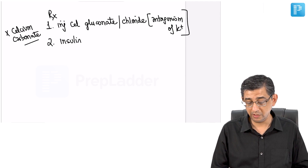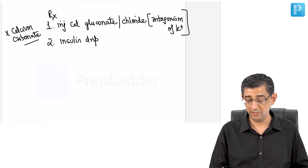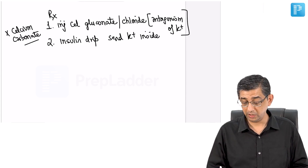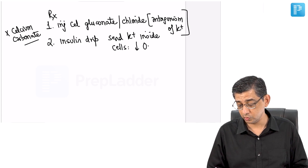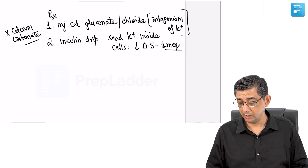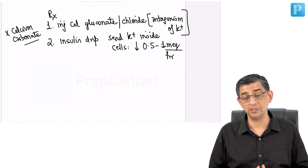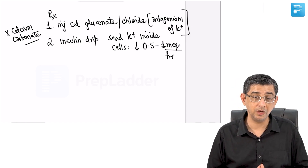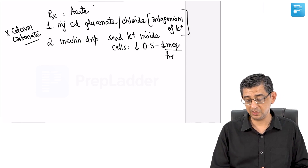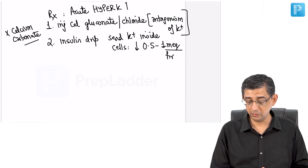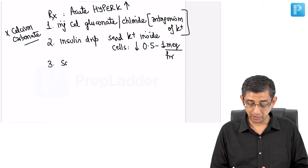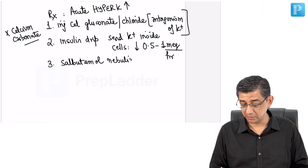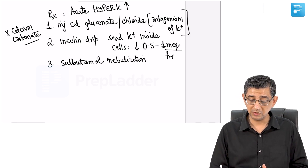To actually decrease potassium values — say from 8 to 7 to 5 — you start the patient on an insulin drip. Insulin causes redistribution of potassium, sending it inside the cells at approximately 0.5 to 1 milliequivalent per hour. This is one of the most efficacious drugs in life-threatening situations. For chronic hyperkalemia, potassium-binding drugs like patiromer are used. In acute hyperkalemia, after calcium gluconate, add insulin drip. Salbutamol nebulization can also be used, as it potentiates the action of insulin, sending potassium intracellularly.